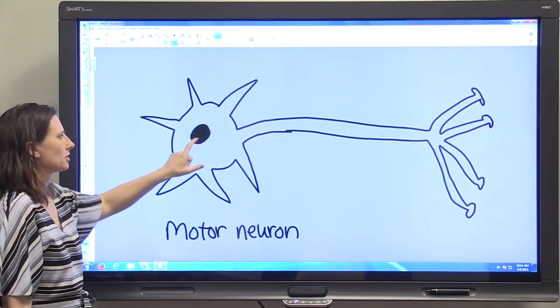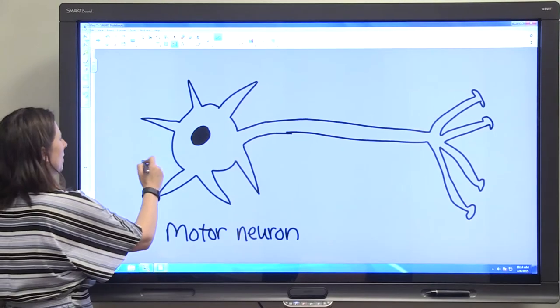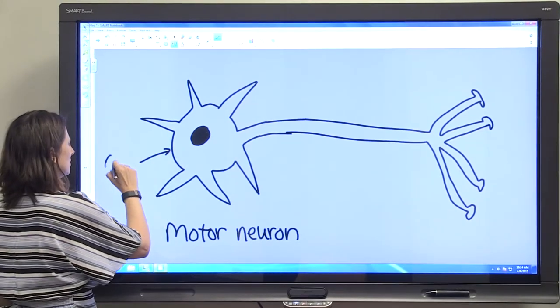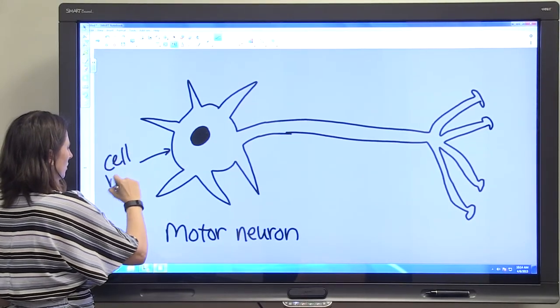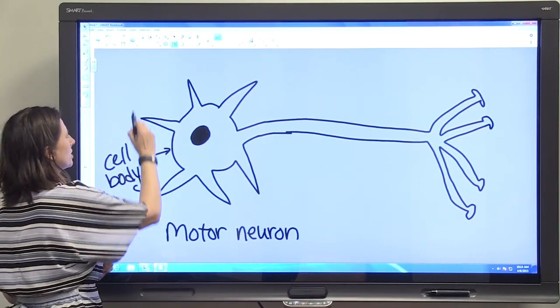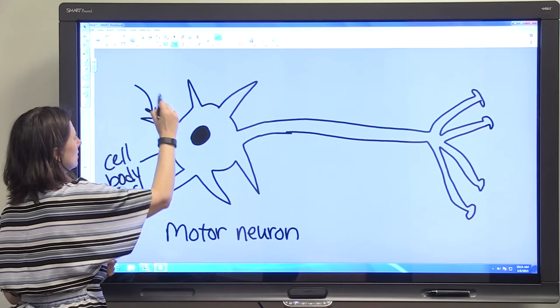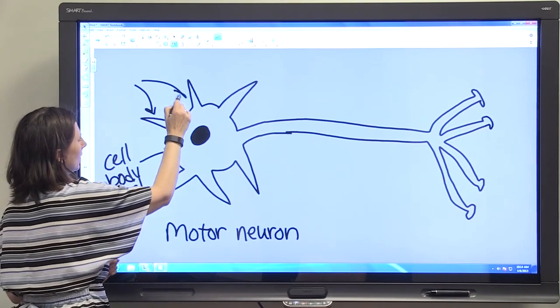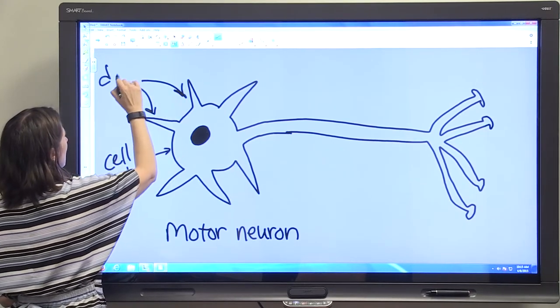This part of the motor neuron with the nucleus is the cell body - the rounded part with the nucleus. These projections off of the cell body are called dendrites.